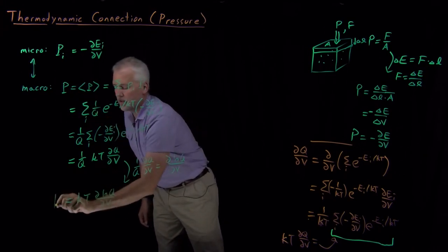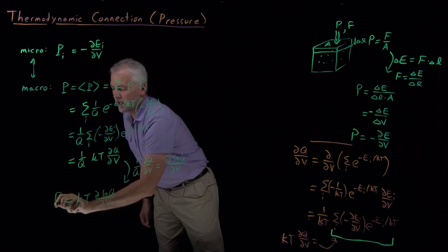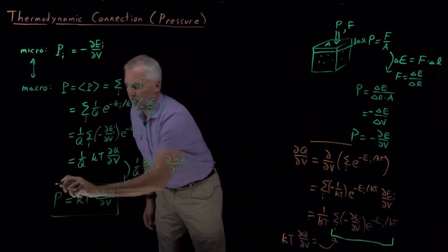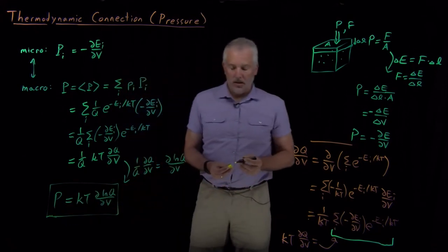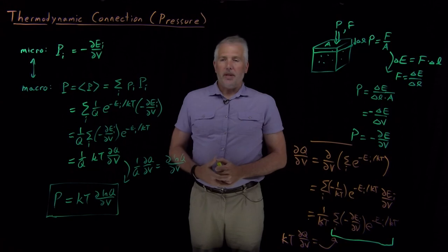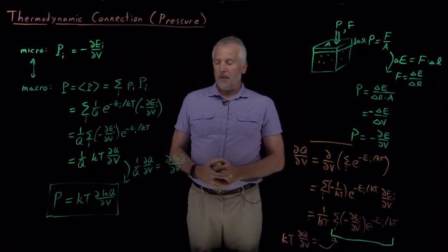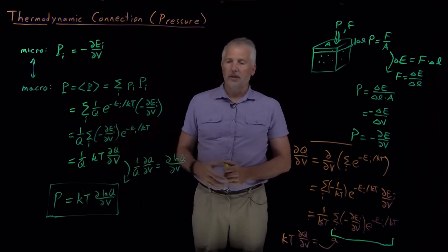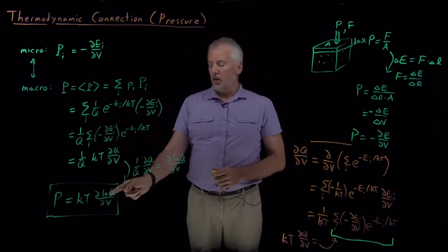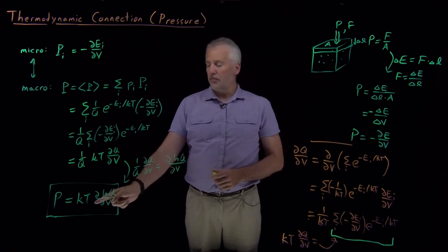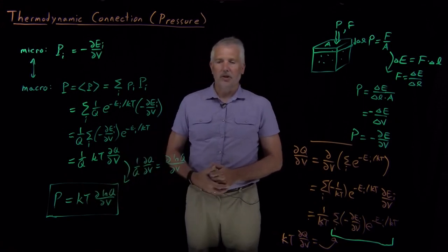This expression is equal to the macroscopic pressure, so it's worth putting in a box and remembering. That's our thermodynamic connection formula for the pressure: P equals kT times the derivative of log Q with respect to V. If we know the partition function and want to find the pressure, we just take the log of the partition function, take its derivative with respect to volume, and multiply by kT.